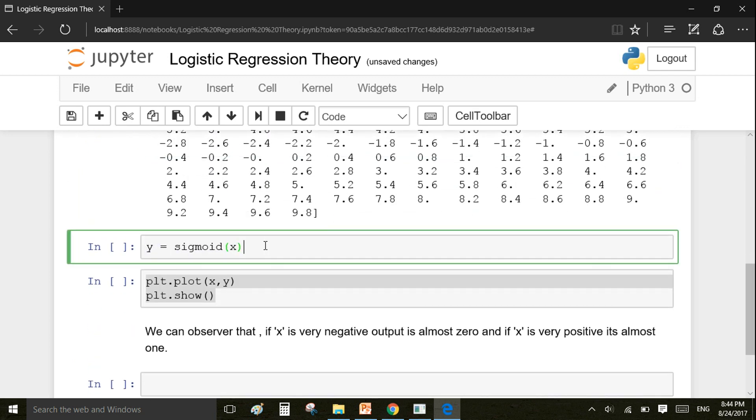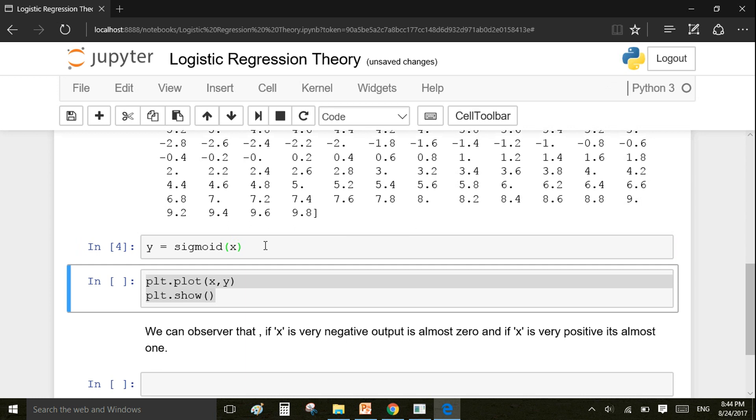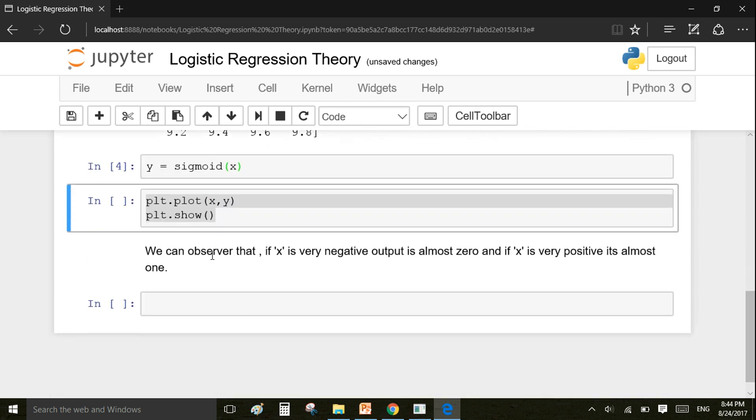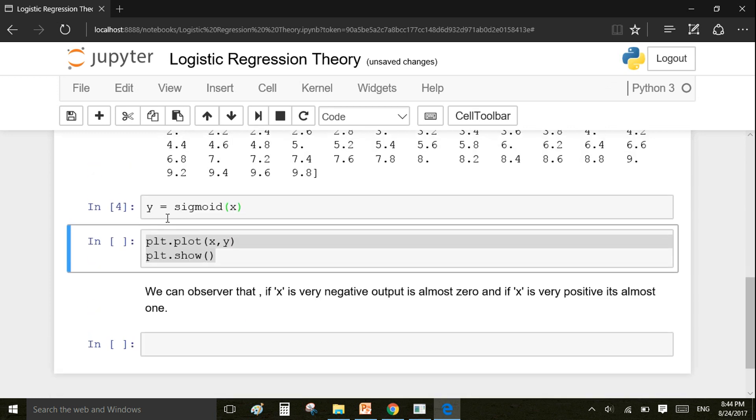I'm going to pass all of these values inside our sigmoid function and check the value of y. So this line will do that: y = sigmoid(x). Now I have the values for x-axis as well as y-axis. I'm going to plot these values and see how it looks.